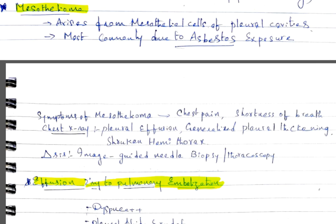Mesothelioma arises from mesothelial cells of pleural cavities. Most commonly, it's due to asbestos exposure. Symptoms include chest pain and shortness of breath. Chest x-ray shows pleural effusion, generalized pleural thickening, and shrunken hemithorax. Diagnosis is done by image-guided needle biopsy or thoracoscopy.